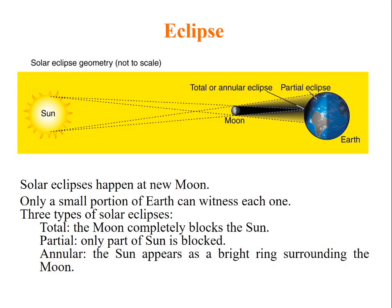Solar eclipse happens at new moon. Only a small portion of Earth can witness each one. There are three types of solar eclipse. Total solar eclipse: the Moon completely blocks the Sun. Partial: only part of the Sun is blocked. Annular: the Sun appears as bright ring surrounding the Moon.